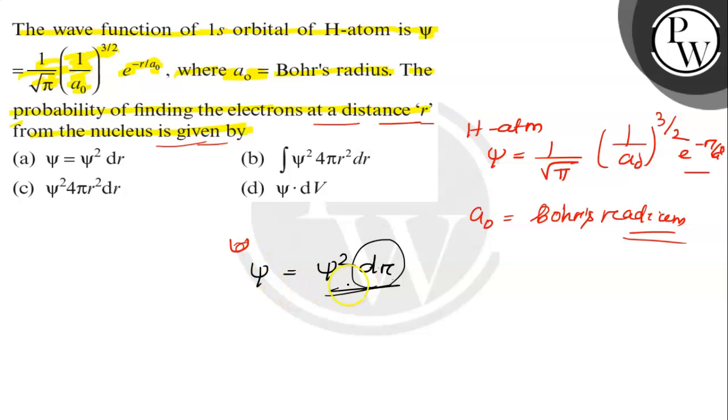So the correct answer is option (a): ψ = ψ² dr. I hope you understood it well, best of luck.